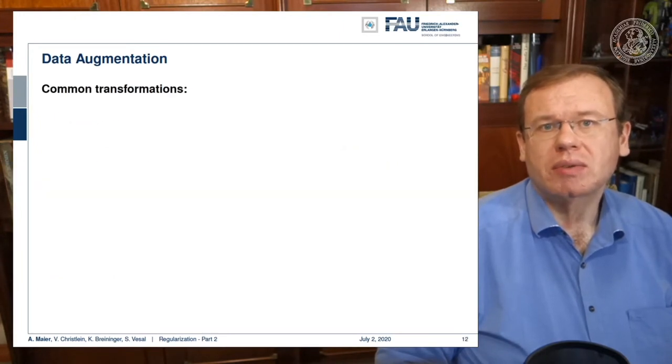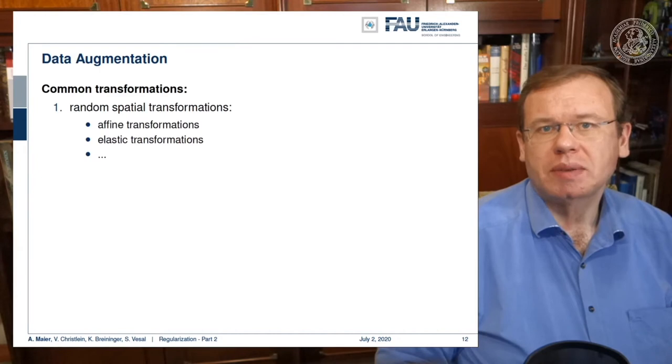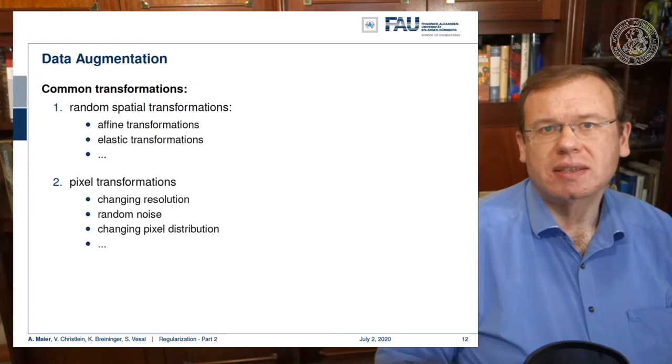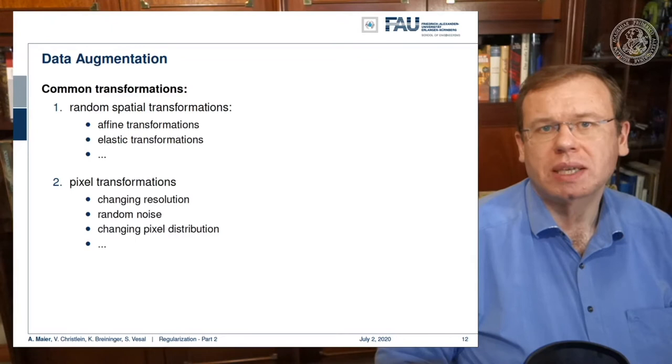There are very common transformations here: random spatial transforms, elastic transforms, then there are pixel transformations like changing the resolution, changing the noise, or changing pixel distributions like color, brightness, and so on. These are typical augmentation techniques in image processing.